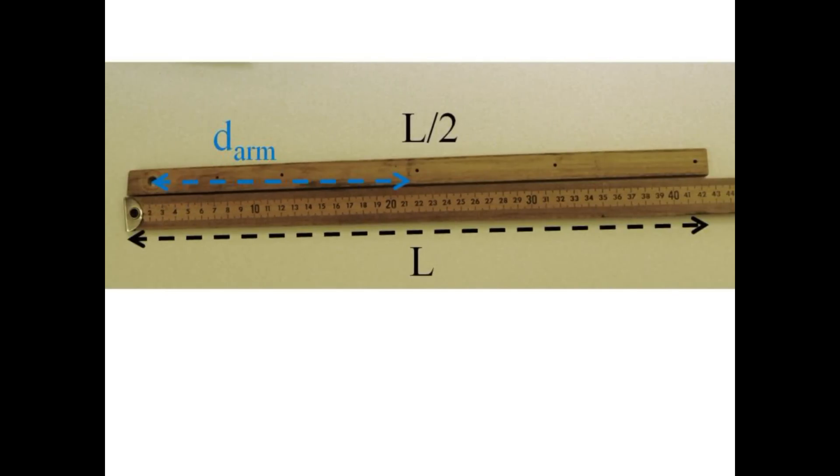The center of gravity is at the middle, but its distance from the elbow joint is slightly less than half the length. Figure out where the middle of the forearm is and then measure the distance to the elbow joint.